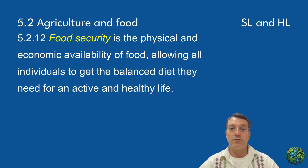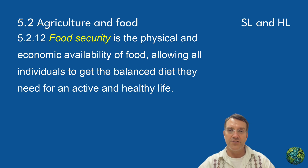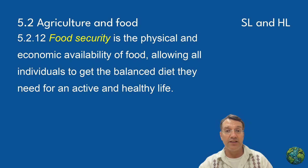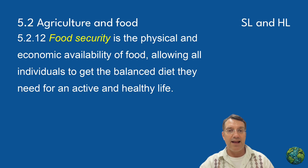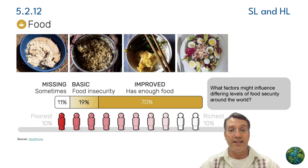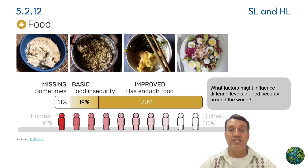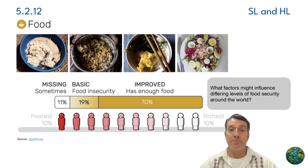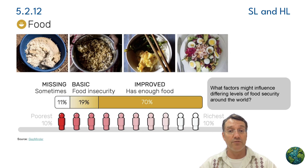Food security represents the ultimate goal of sustainable agriculture. It's defined as the physical and economic availability of food, allowing all individuals to get the balanced diet they need for an active and healthy life. This definition emphasizes that food security isn't just about total production — it's about access, affordability, and nutrition quality. This diagram from Gapminder shows the stark reality: while 70% of people have enough food, 19% — about 1 in 5 — experience basic food insecurity, and about 1 in 10 sometimes go without meals entirely. The correlation with wealth is clear: the poorest people experience the highest rates of food insecurity.